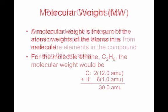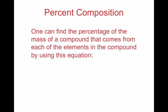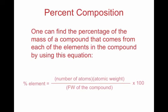Before we talk about molar mass, let's talk about percent composition. Percent composition is essentially asking: what percent of this compound is a given element? We have a formula: take the number of atoms of the element we're interested in, times the atomic weight from the periodic table, divided by the formula weight of the compound, times 100. That gives us the percent of the element.